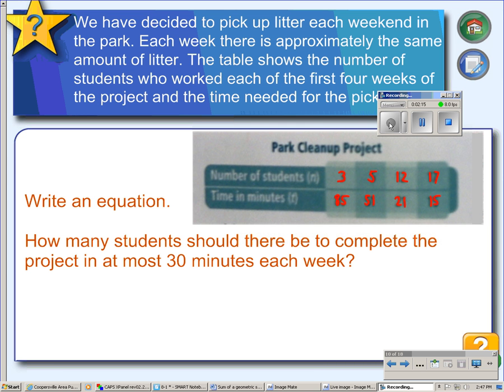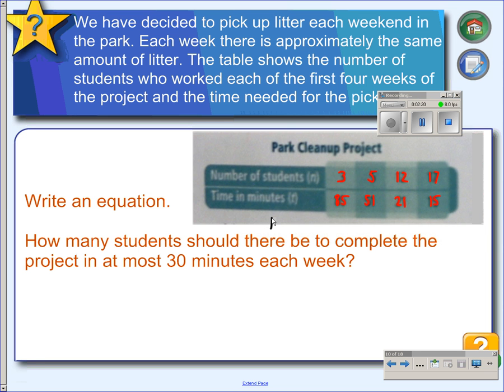First thing we have to do is determine if it's a direct or inverse variation. Since the more students we have, the less time it takes, let's check and see if it's inverse. To determine if it's an inverse variation, we would multiply x times y and see if it comes out to a constant. If it comes out to a constant, then it is an inverse variation.